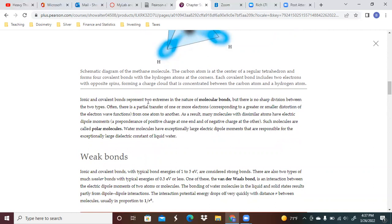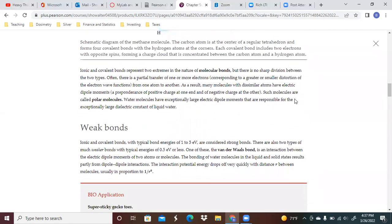Ionic and covalent bonds represent two extremes in the nature of molecular bonds, but there's no real sharp division between the two types. Often there is a partial transfer of one or more electrons from one to the other. As a result, many molecules with dissimilar atoms have electric dipole moments, a preponderance of positive charge at one end and negative at the other. Some molecules are called polar molecules. Water molecules have an exceptionally large electric dipole moment that is responsible for the exceptionally large dielectric constant of liquid water.